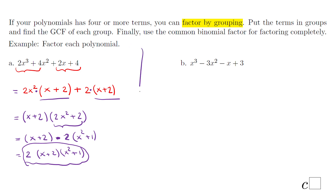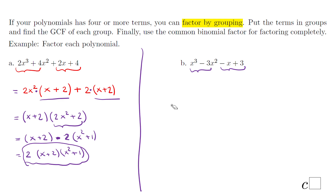For Part B we use factoring by grouping again. Grouping the first two terms of x³ − 3x² − x + 3, the first two give us x²(x − 3). For the last two terms, −x + 3, we factor out a negative 1: −1(x − 3).